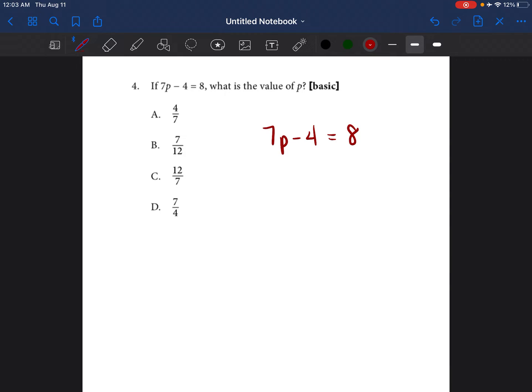The goal is always to isolate the variable. So we want to get the variable by itself. Right now, the variable is not by itself because it has the four by it and also the seven. So if you are not really familiar with these types of problems, simply first get rid of the number that's not attached to the variable, which is four.